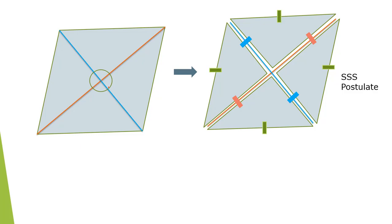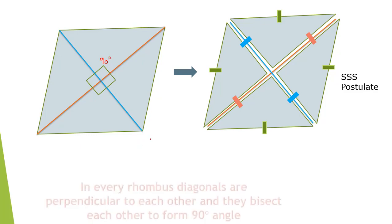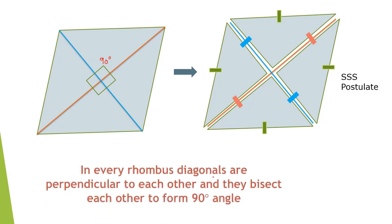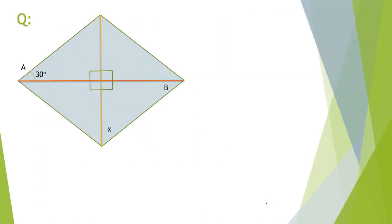The angles at the intersection must be 360 degrees because it is a complete spin. If we divide 360 into four equal parts, we get 90 degrees for each angle. So at their intersection, the diagonals make a 90-degree angle. In every rhombus, the diagonals are perpendicular to each other and they bisect each other to form 90-degree angles.